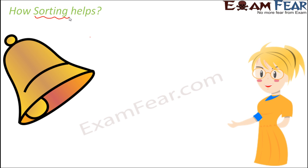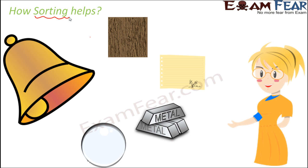Now how is sorting going to help us? Let's say that we want a bell to be made. What is the basic purpose of the bell? It should produce some sound. Now let's say that we have four options of materials: wood, paper, metal, and glass. Out of these, which option will you choose to make a bell?